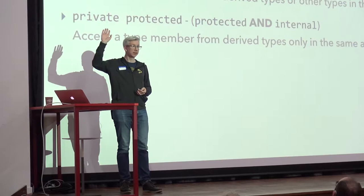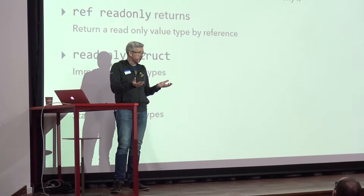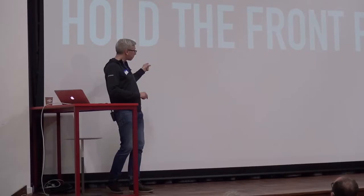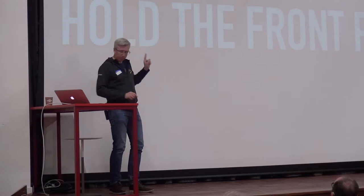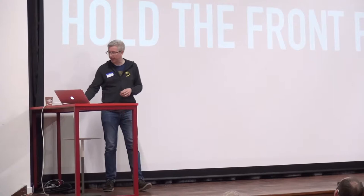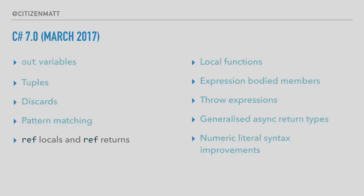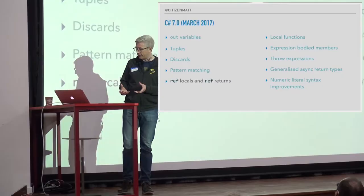The final piece for C# 7.2 is reference semantics with value types. This is an interesting set of language syntax — a whole new bunch of keyword modifiers to allow us to do interesting things with value types and references. This is now, all of a sudden, a big feature, because we've got a whole vocabulary for working with value types as references, especially if we pull in ref returns and ref locals from C# 7.0. Put them all together and we've got a way of working with value types in a really useful manner.